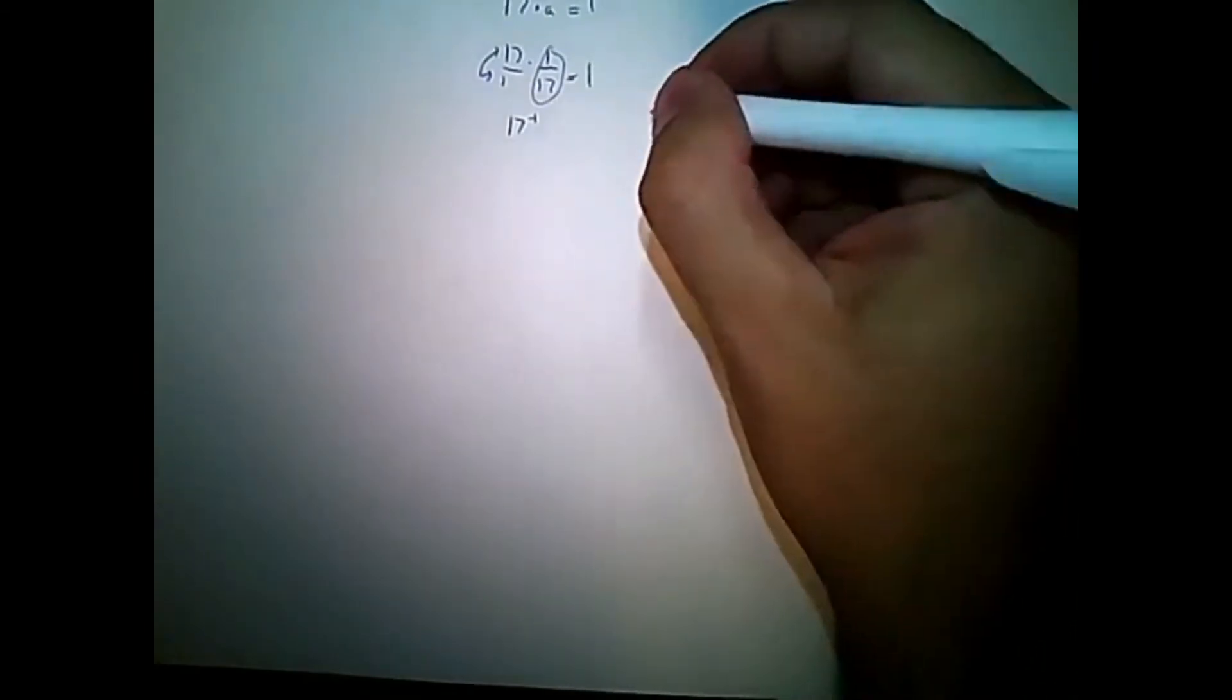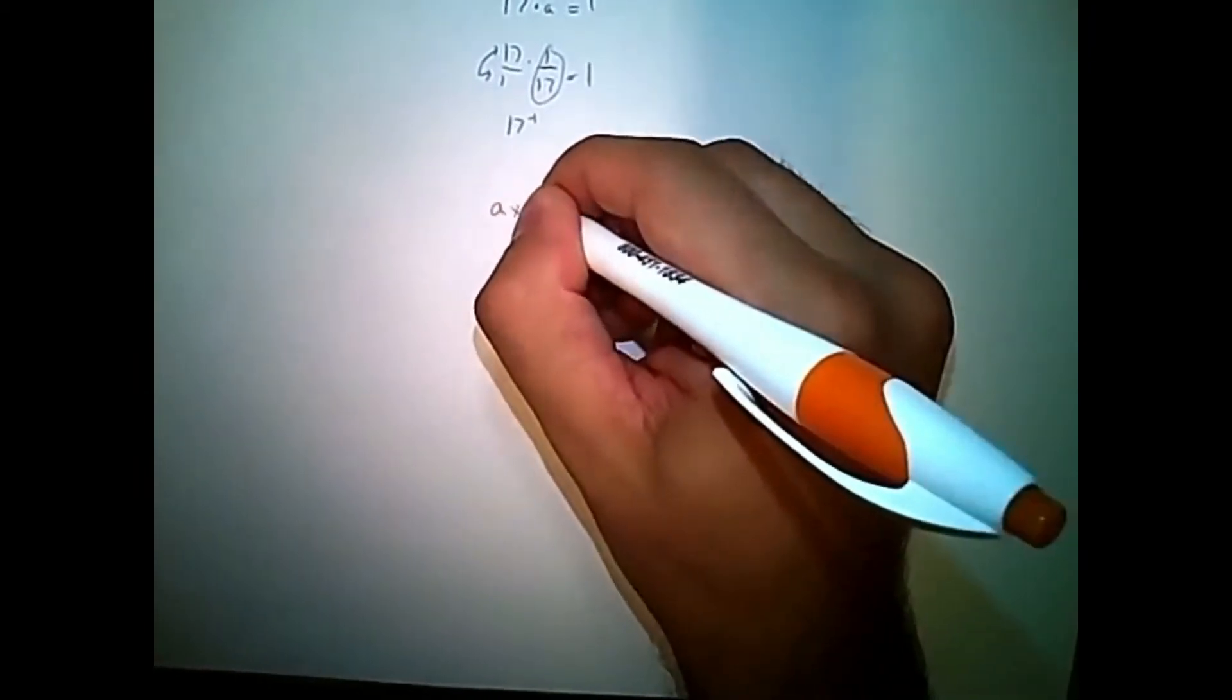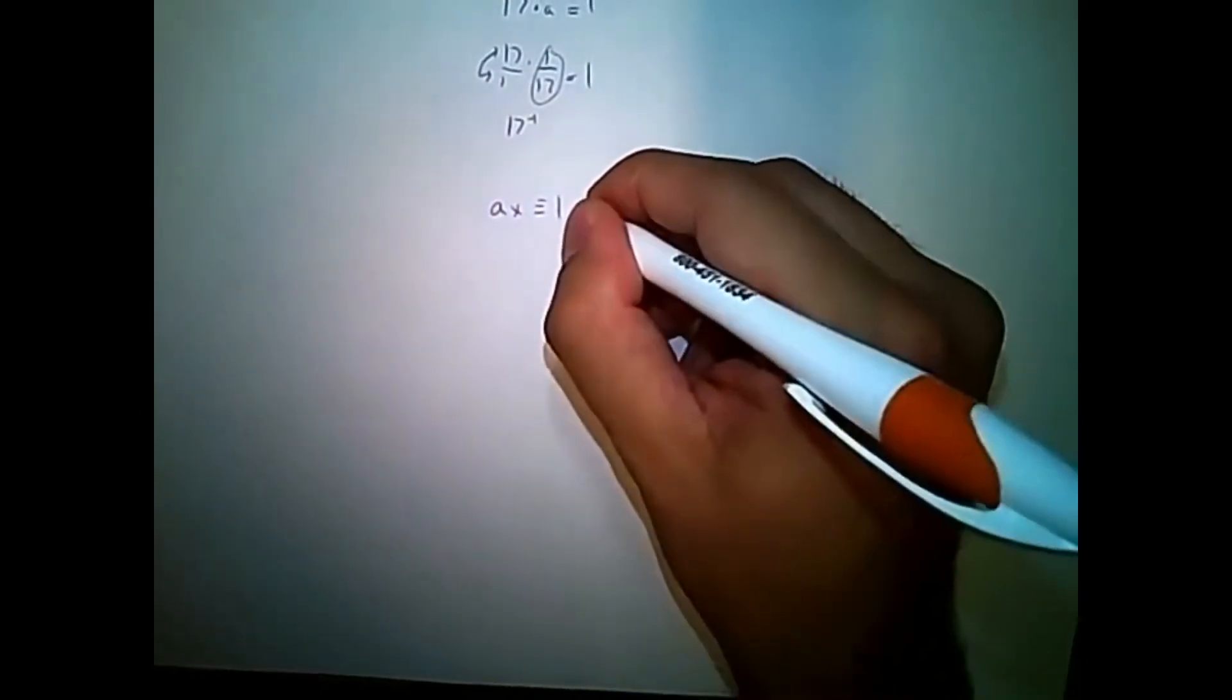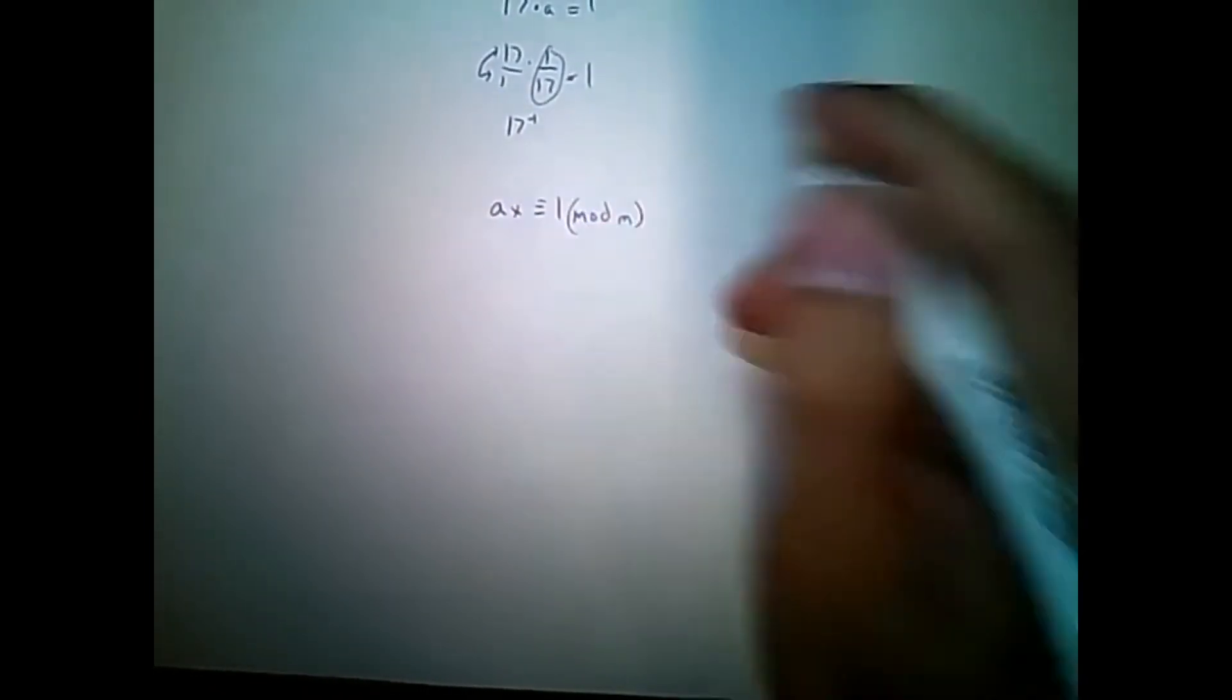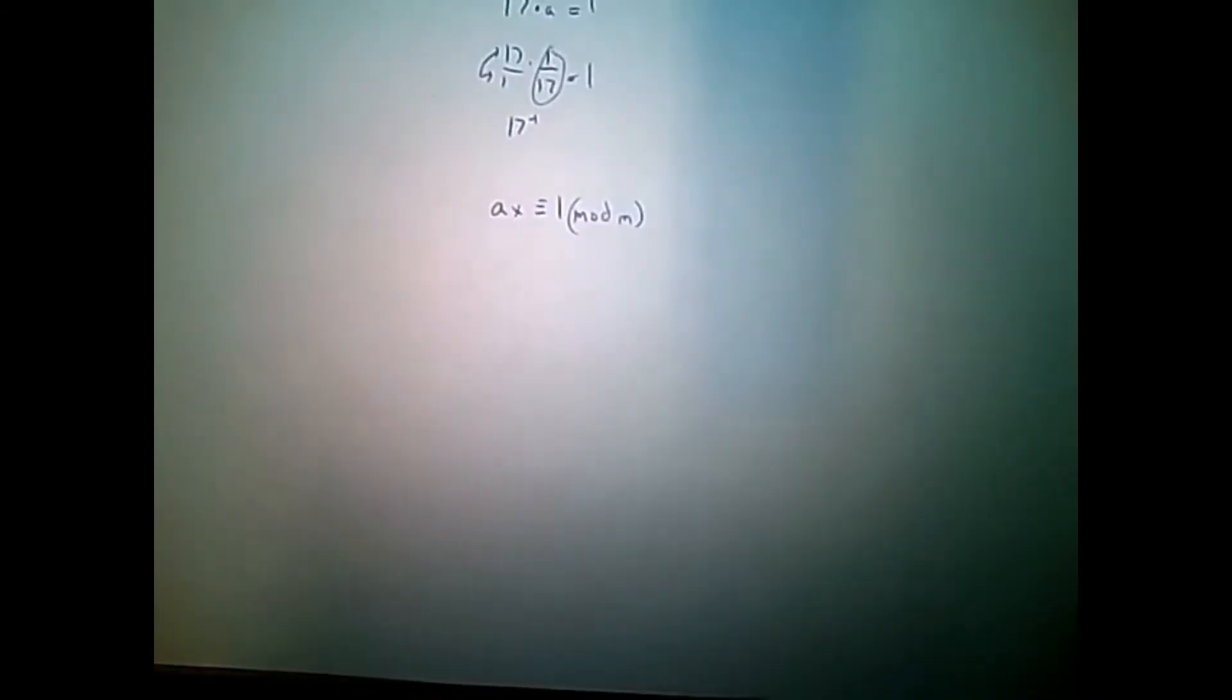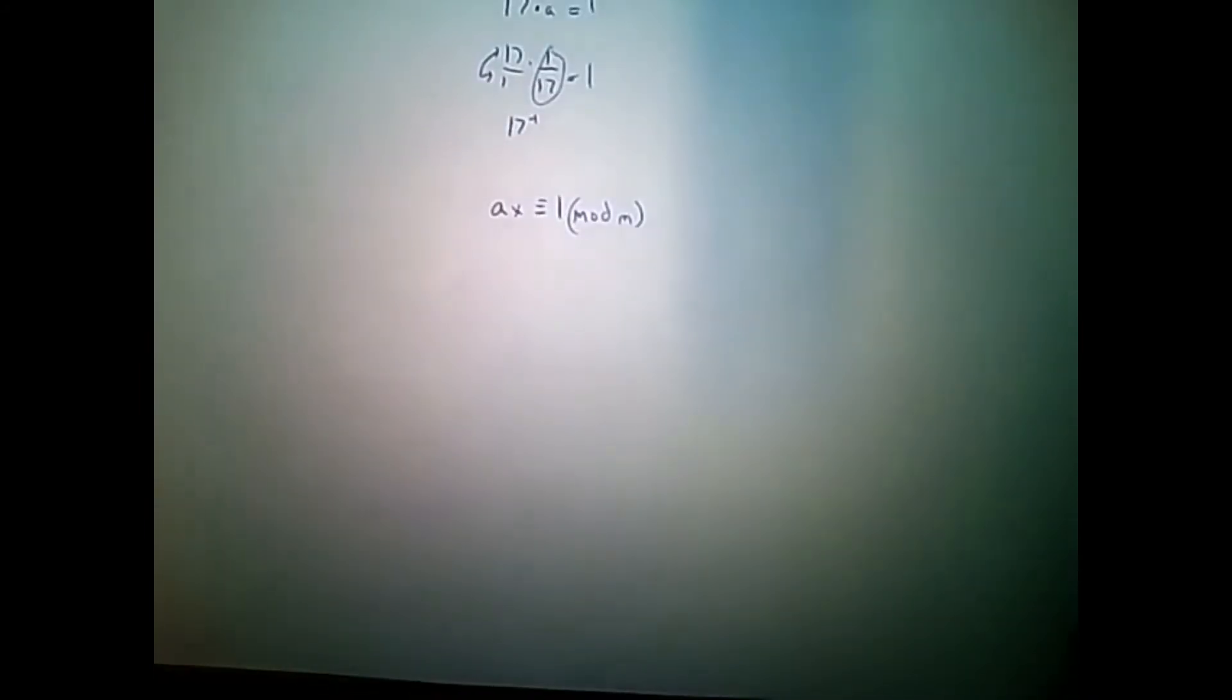If I'm solving for the modular multiplicative inverse, it's governed by this equation here. This is ax equal to 1 over mod m. And you can look at this at the Wikipedia, or in your text, or other sources.